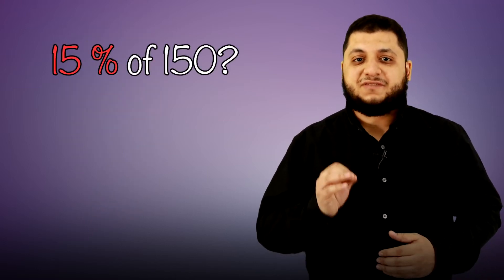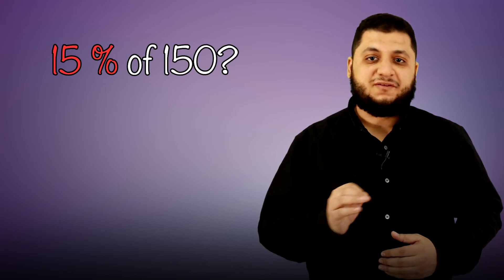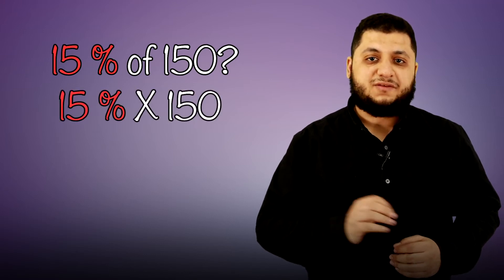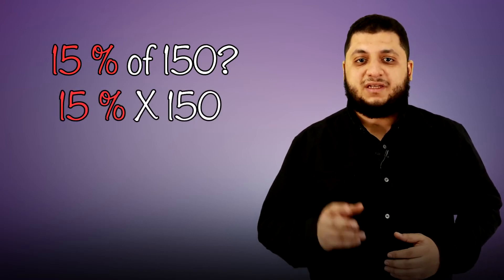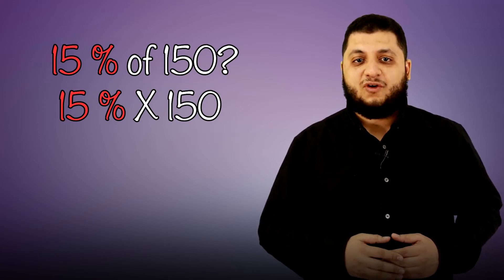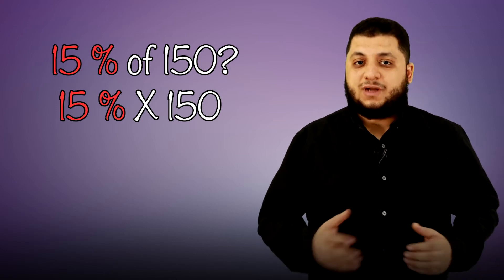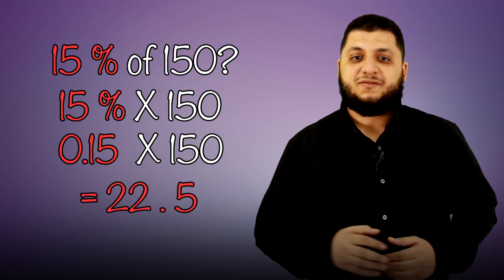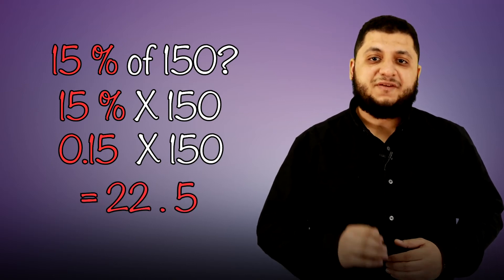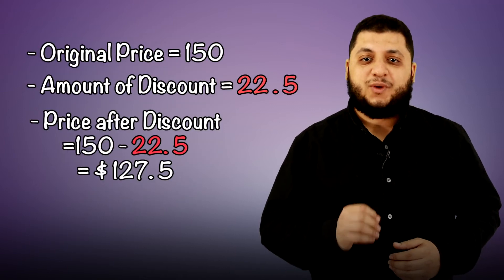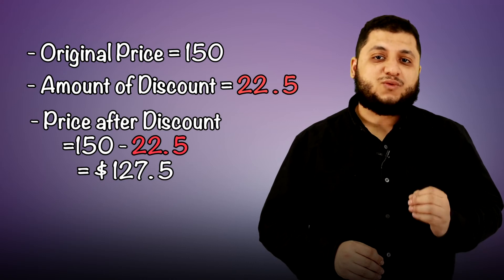Of means multiply, so we have to multiply 15% by 150. 15% can be written in two different forms: fractional form like 15 over 100, or decimal form 0.15. So now multiply 0.15 times 150, which equals 22.5. So 22.5 is the amount of discount. To calculate the new price, subtract 22.5 from 150, so it will be $127.50.